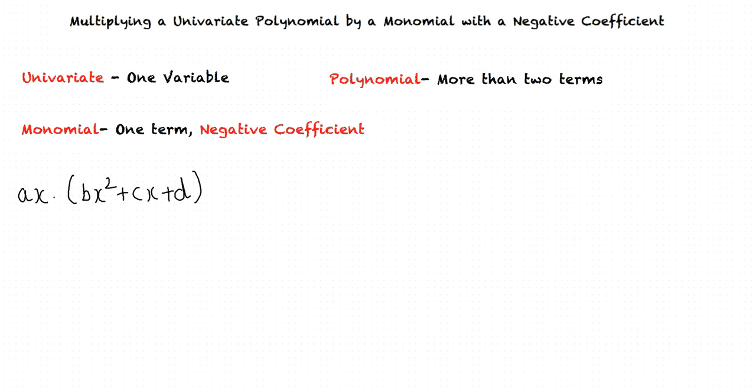For example, the types of problem we are going to solve are ax times bx square plus cx plus d where a is negative. To solve problems of this type, we will use the distributive property.